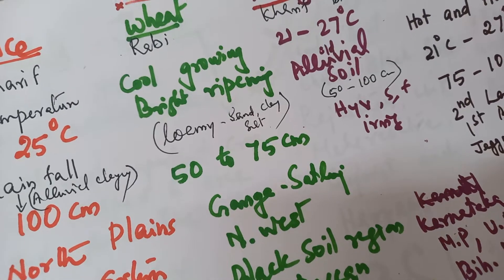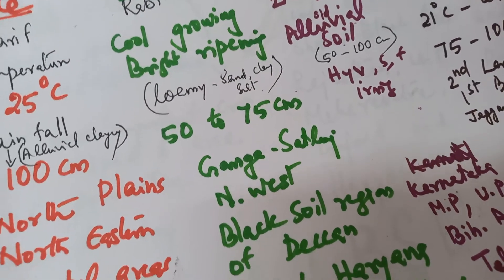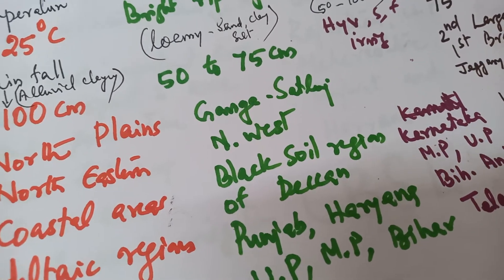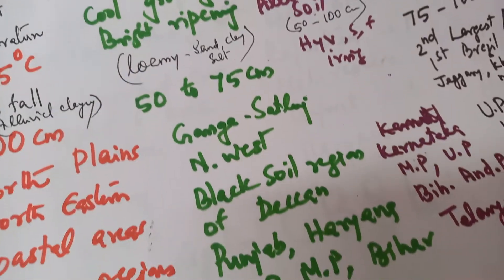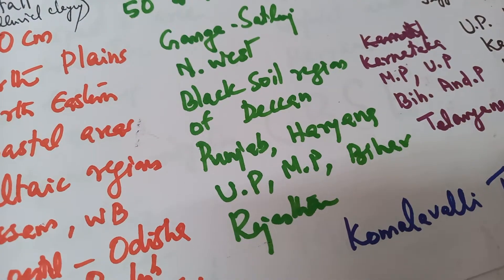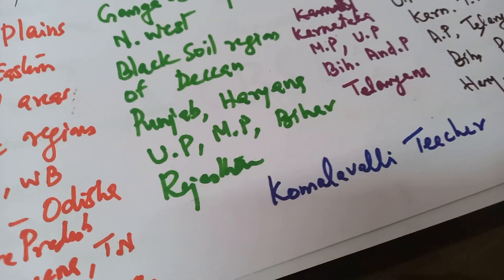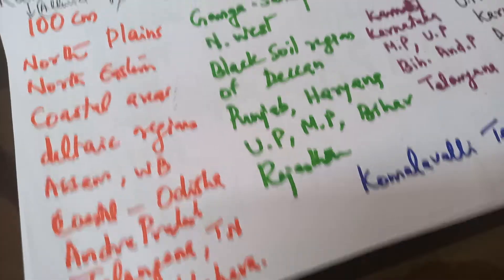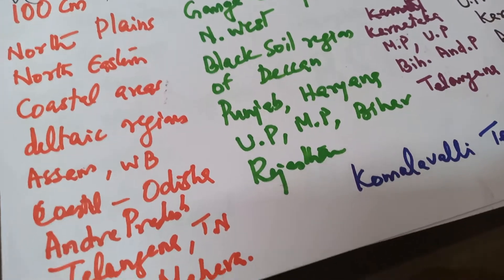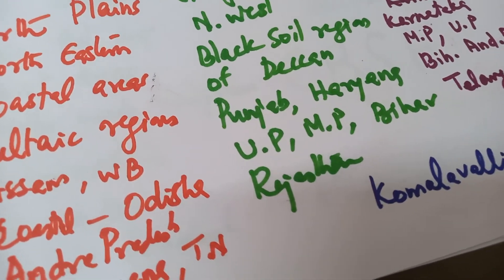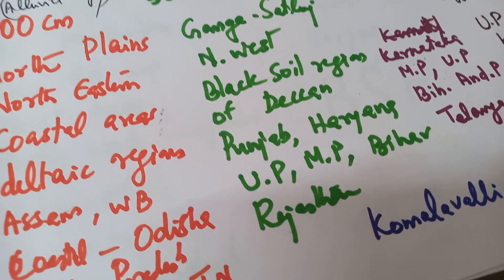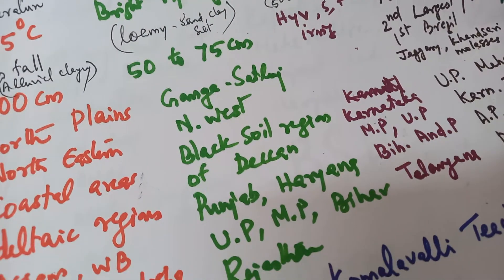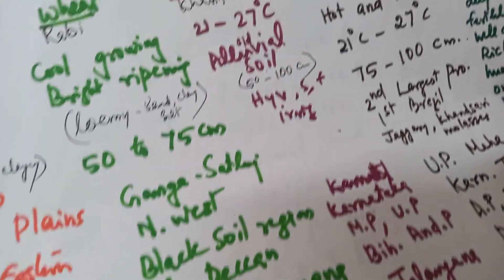The major wheat growing areas are Punjab, Haryana, Uttar Pradesh, Madhya Pradesh, Bihar, and Rajasthan. Regarding rice also, Punjab, Haryana, and UP have started to produce it. So the major wheat growing areas are Punjab, Haryana, Uttar Pradesh, Madhya Pradesh, Bihar, and Rajasthan.